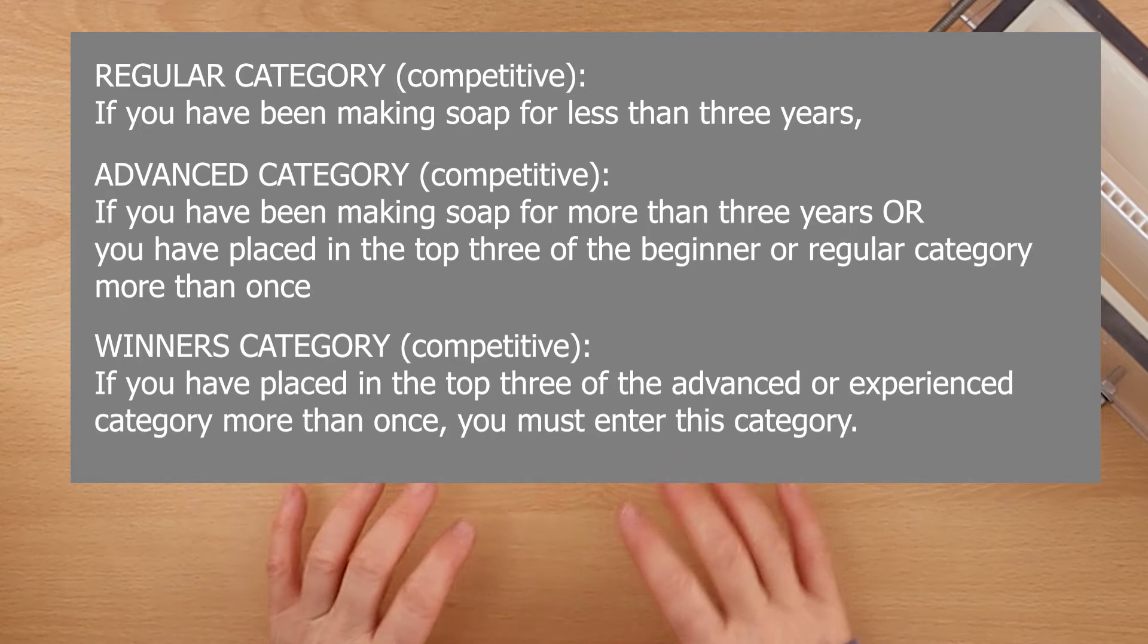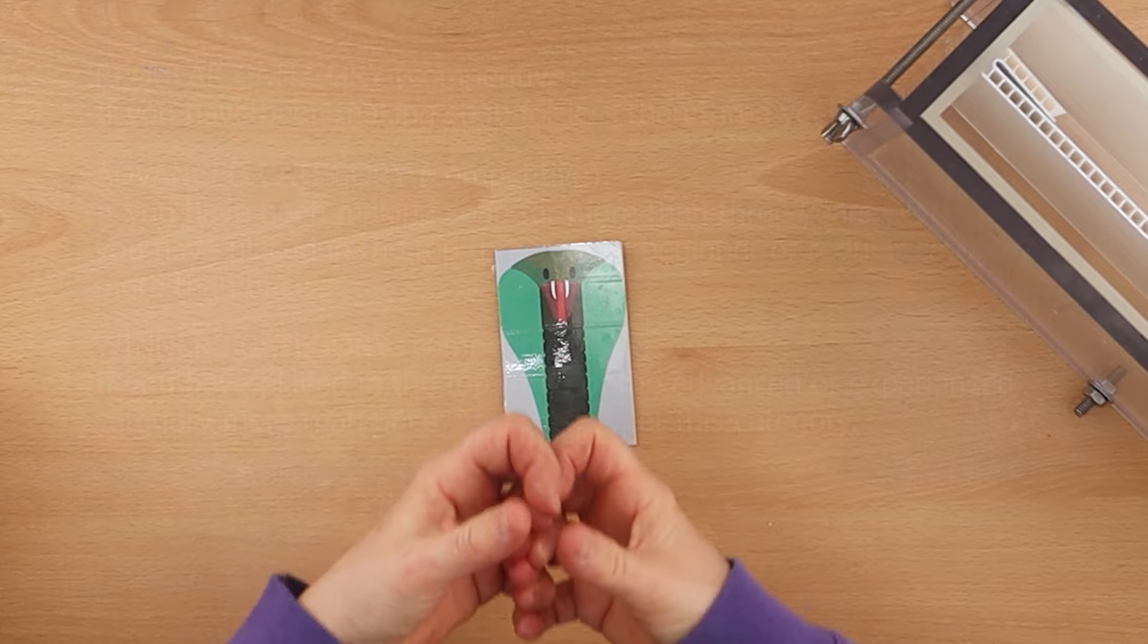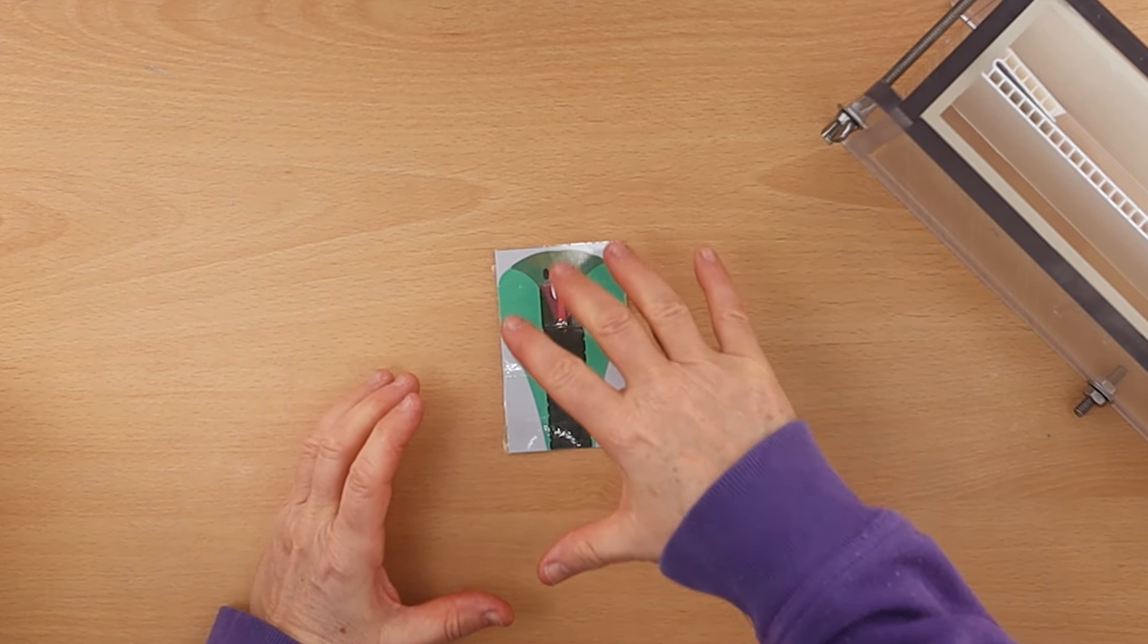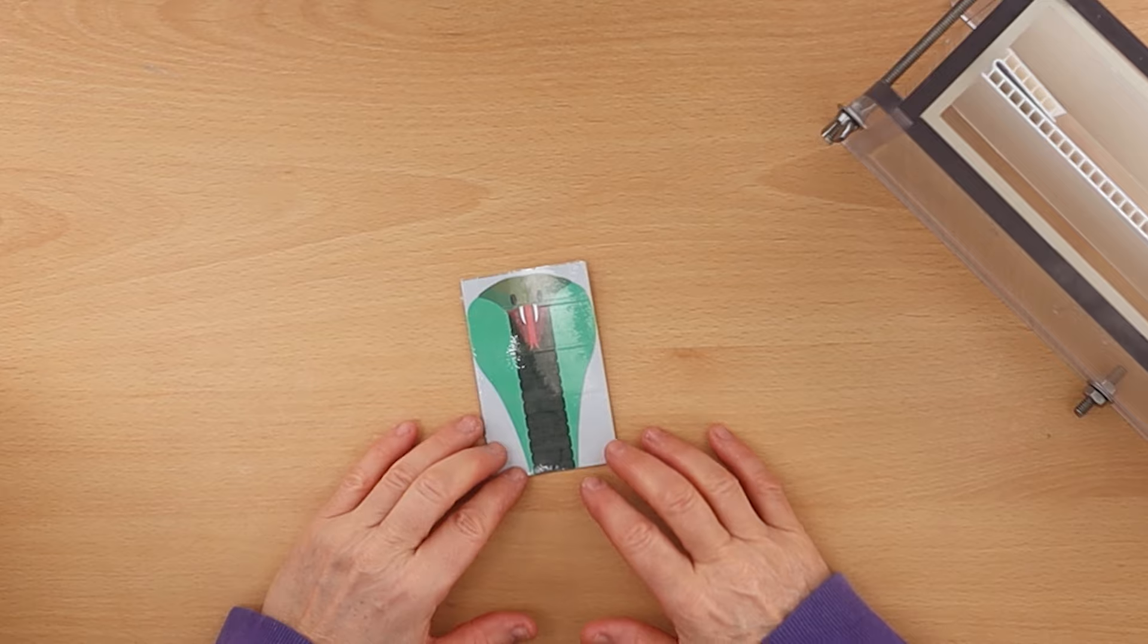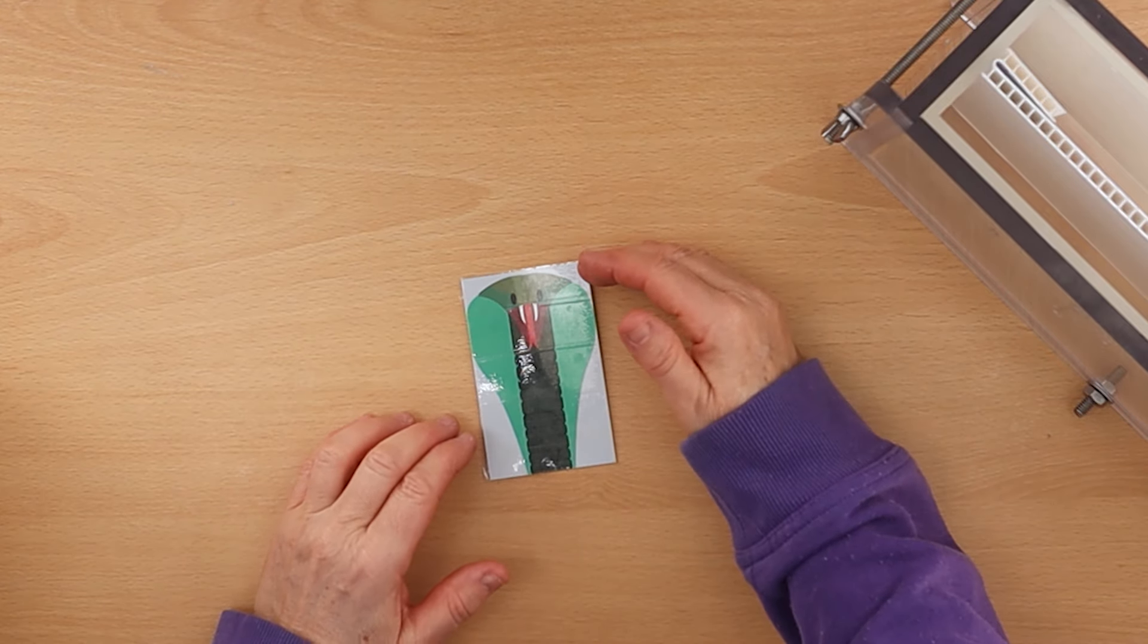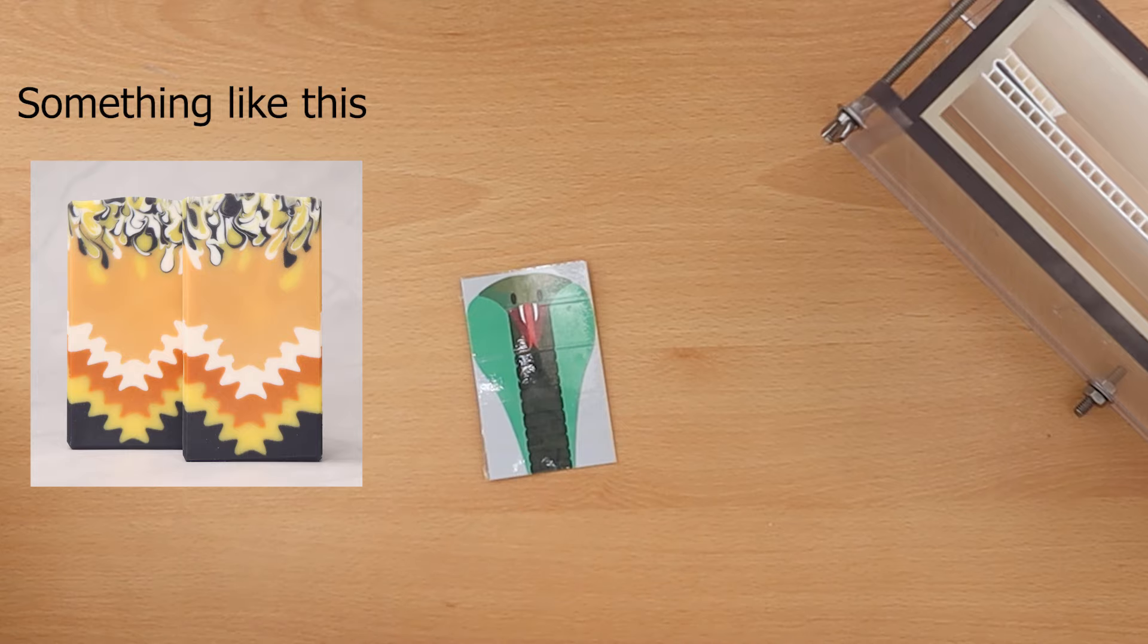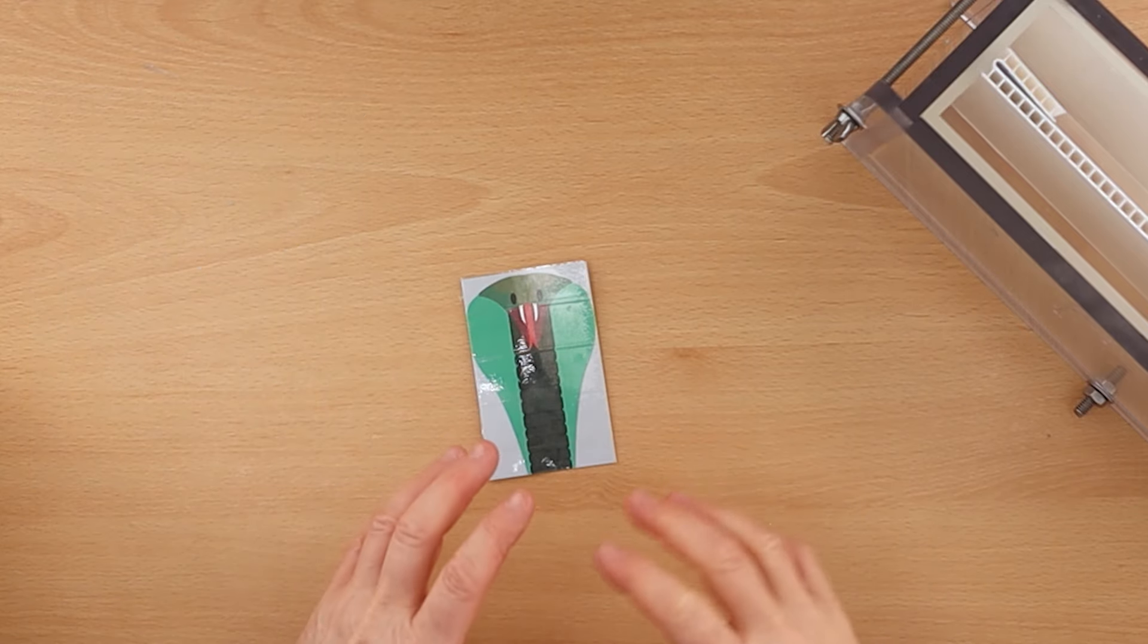I'm in the winner's category, and so for this challenge, although we have to do a drop swirl technique, we have to do another technique in our soap as well. So for example, you could do a drop swirl and you could do some layers. The rules state that the drop swirl has to be at least 50 percent of our soap.